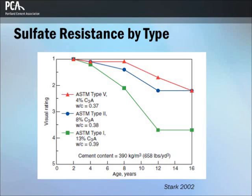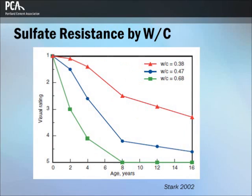This graph shows the performance of concretes made with different cements in sulfate soil. Type 2 and Type 5 cements have lower C3A contents that improve sulfate resistance. The vertical axis is a visual rating in which a higher number means more deterioration. Improved sulfate resistance results from low water-to-cementitious-materials ratios, as demonstrated over time for concrete beams exposed to sulfate soils in a wetting and drying environment. The data represents average values for concretes containing cement types 1, 2, and 5, blended cements, pozzolans, and slags.